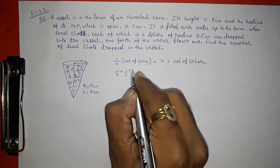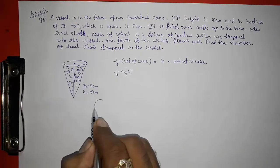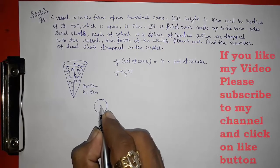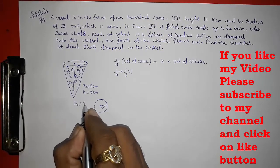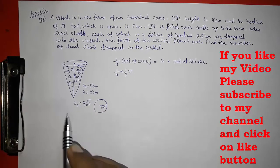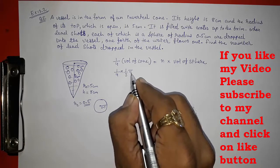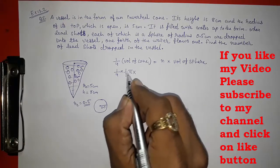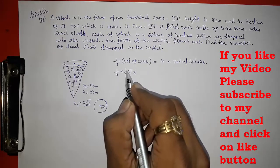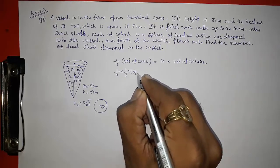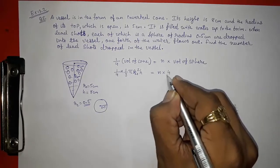Now we put in the formulas and values. I am taking r1 for the cone's radius and r2 for the small ball's radius, where r2 = 0.5 cm. Volume of cone is (1/3)π r1² h. This equals n times the volume of the sphere, which is (4/3)π r2³. I am not substituting the value of π yet because it will cancel out.